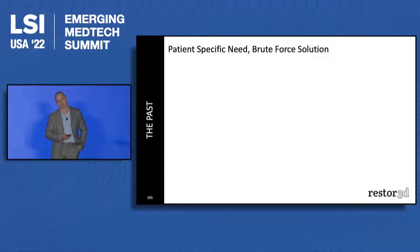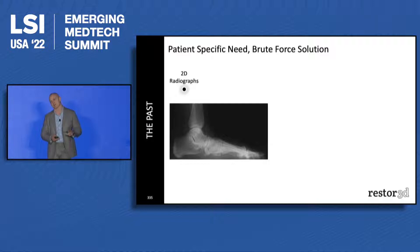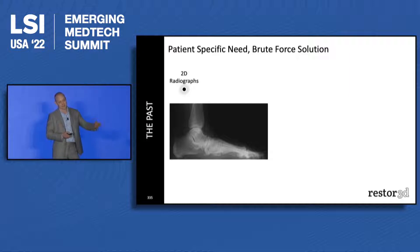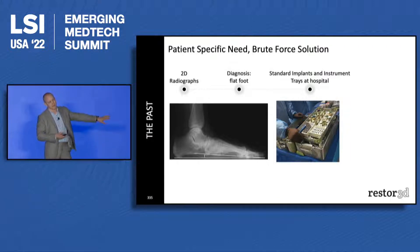If you look at the past, the way orthopedic reconstructions were done, it was really a patient-specific need — and it's almost always been a patient-specific need — but we've used sort of a brute force solution. One example is a very simple reconstruction in foot and ankle. If you have flat foot, it means you need an arch restored in your foot. To evaluate flat foot, you get a radiograph or a CT. The doctor diagnoses you, and there's some angle missing from your foot or the arch. Then they take that CT or that diagnosis and throw it out — surgeons don't use that again.